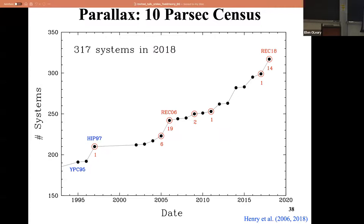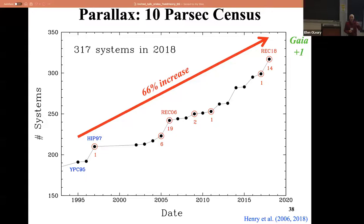We published one big paper in 2018 - a full sweep of everything we had at the time. And we said, okay, we're pretty much done publishing parallaxes because there's this thing called Gaia that went up. Gaia also went through the 10-parsec sample and found one new thing. So Gaia did not add a lot to the 10-parsec sample because people worked on that really hard. Nearer is better. The exoplanets you're going to want to look for are going to be around things within 10 parsecs first, maybe 25 parsecs.